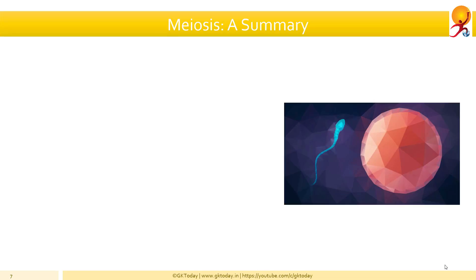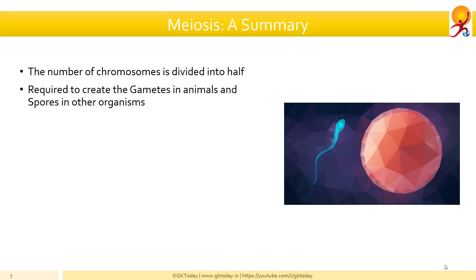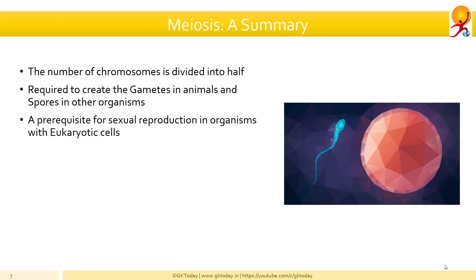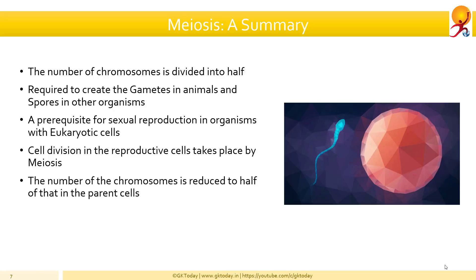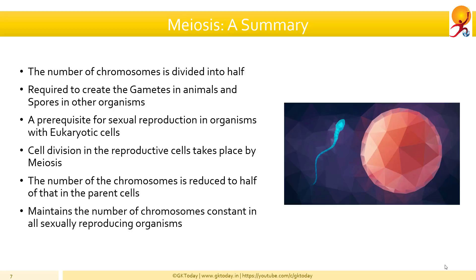So what did we learn about meiosis? Meiosis results in daughter cells which have half the number of chromosomes as the parent. Meiosis is required to create the gametes in animals and spores in other organisms. Meiosis is a prerequisite for sexual reproduction in organisms with eukaryotic cells. The cell division in reproductive cells takes place via meiosis. In meiosis, the number of chromosomes is reduced by half to that of the parent cell, which means meiosis is responsible for maintaining the number of chromosomes constant in all sexually reproducing organisms.